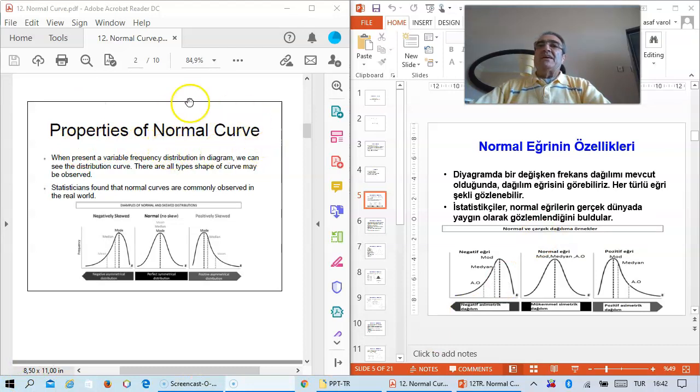Properties of normal curve. When presenting a variable frequency distribution in diagram, we can see the distribution curve. There are all types of shapes of curves that may be observed. Statisticians have found that the normal curve is widely observed in the real world. Let's look at a diagram and examine its properties.